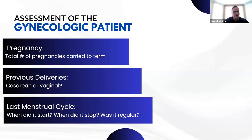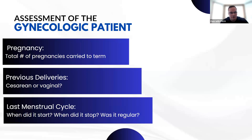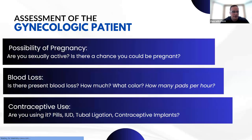For an obstetric complaint, in addition to our regular assessment questions, there are other things that should be on our radar. These include the total number of pregnancies carried to term, previous deliveries and whether they were cesarean or vaginal — because that tells us the likelihood of challenges if we're nearing delivery after a previous C-section — and the last menstrual cycle: when it started, when it stopped, and whether it was regular. We also ask about the possibility of pregnancy.